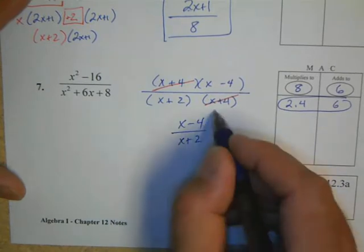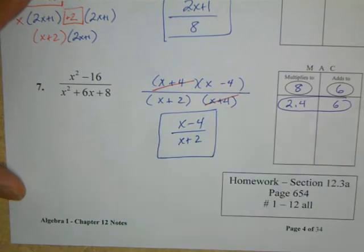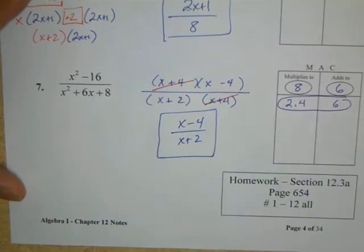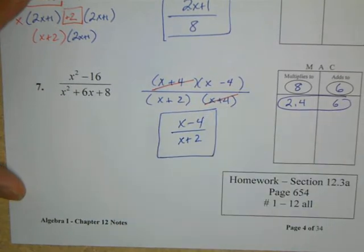We now can cancel our factors, our x plus 4s, leaving us with an answer of x minus 4 over x plus 2.